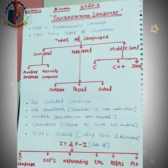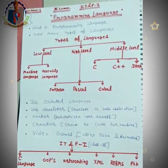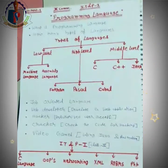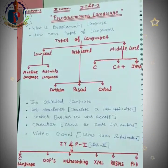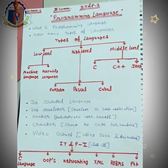Iske liye hamen kisi na kisi language ki zaroorat padti hai — jaise general life mein hum Hindi, English aur local languages use karte hain. Ab baat karte hain programming language ki — aisi language jisme khub saare codes hote hain, jinke zariye hum ek program create karte hain, aur phir ek software create karte hain.